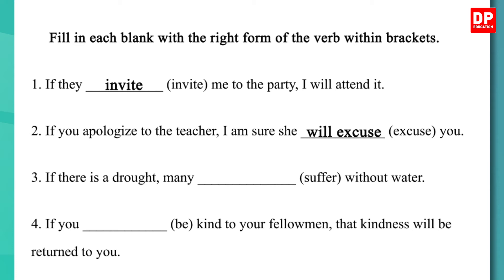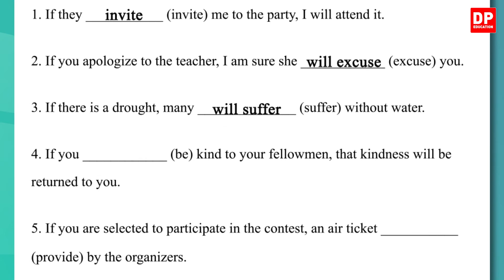Now look at the third sentence. Again you have the blank in the result clause, so fill it with a simple future tense verb. The answer is: 'If there is a drought, many will suffer without water.' Fourth one: 'If you ___ be kind to your fellow man, that kindness will be returned to you.' You have the blank in the condition, so fill it with the simple present tense verb. The answer is: 'If you are kind to your fellow man, that kindness will be returned to you.'